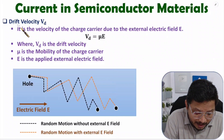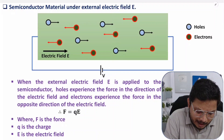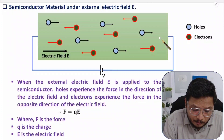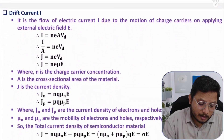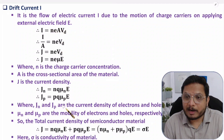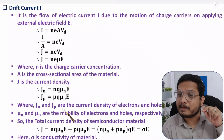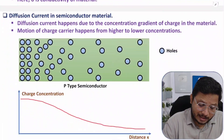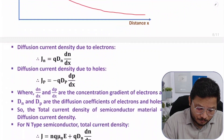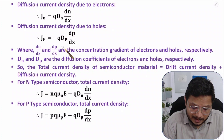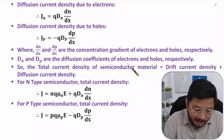First I'll explain what is the meaning of drift velocity, then I'll explain one practical situation in which I'll explain how semiconductor material reacts when placed under an external electric field. Based on this I'll derive drift current. After drift current I'll explain diffusion current in semiconductor material and derive the diffusion current density equation, as well as how to calculate total current density, which is a resultant of drift current density and diffusion current density.